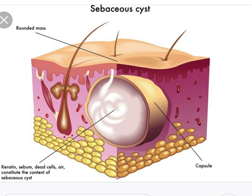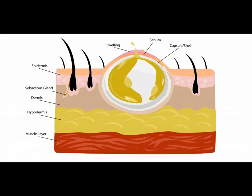The sebaceous cyst is a retention cyst arising due to the blockage of the sebaceous duct and accumulation of secretions within the gland. These sebaceous glands are located in the dermis and their duct opens directly into the skin or into the hair follicles. These glands secrete sebum.